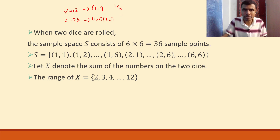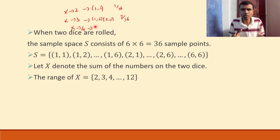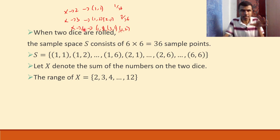Now let's say capital X is three. When will you get capital X equals three? There are two possibilities: (1,2) and (2,1). So the probability that capital X is three is 2/36. For capital X equals four: (1,3), (3,1), and (2,2) — so the probability is 3/36.